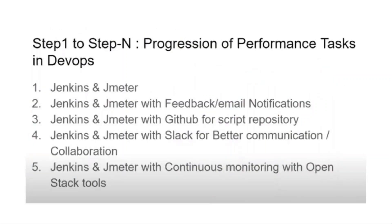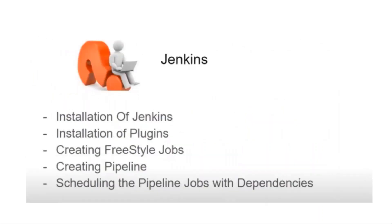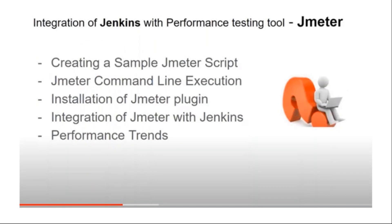We'll progressively learn Jenkins and JMeter, then automated feedback and email notifications, followed by GitHub, Slack, and continuous monitoring — all implemented in a project context. From a Jenkins perspective, we'll learn how to install Jenkins, install plugins, and create pipelines — one job after another. You'll have a functional job, a smoke testing job, an AppDynamics job, and a JMeter job. We'll see how to create these pipelines.